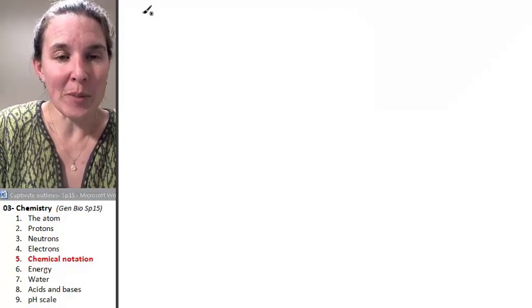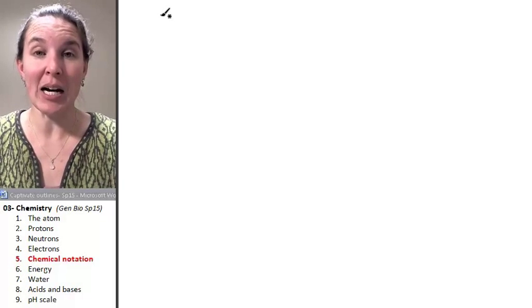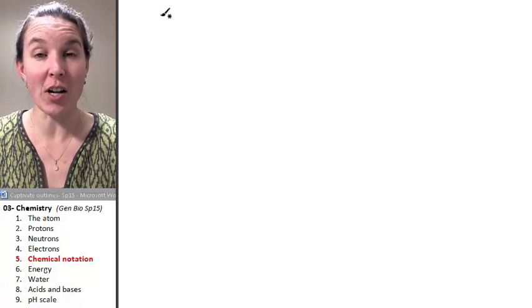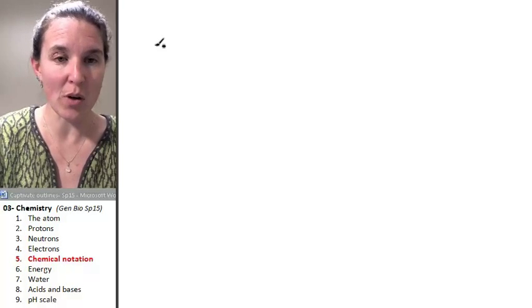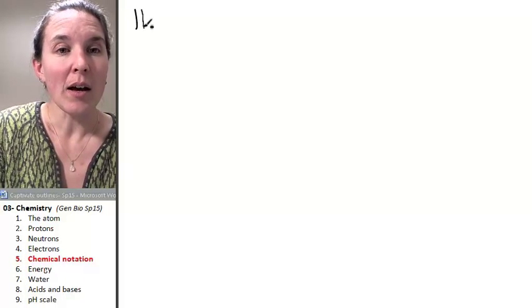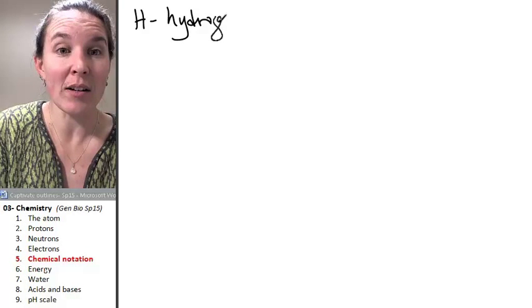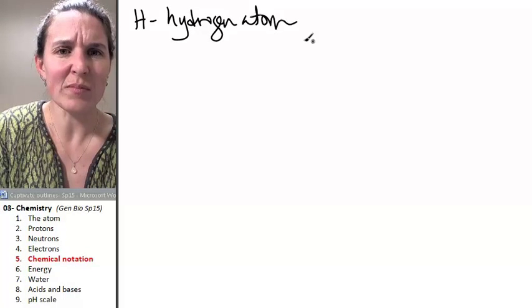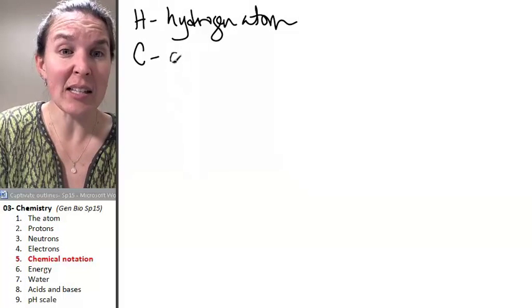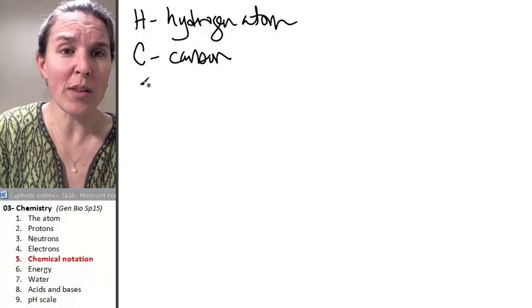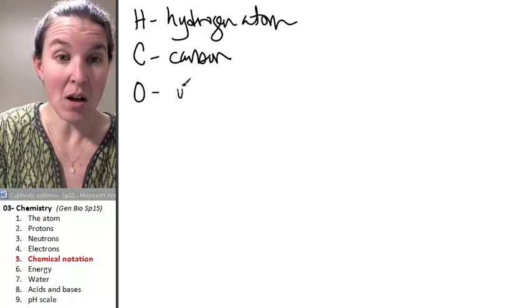First of all, any element is indicated by the letters on the periodic chart. So, for example, the letter H is indicating a hydrogen atom. The letter C is carbon. What do you think the letter O is? Oxygen.